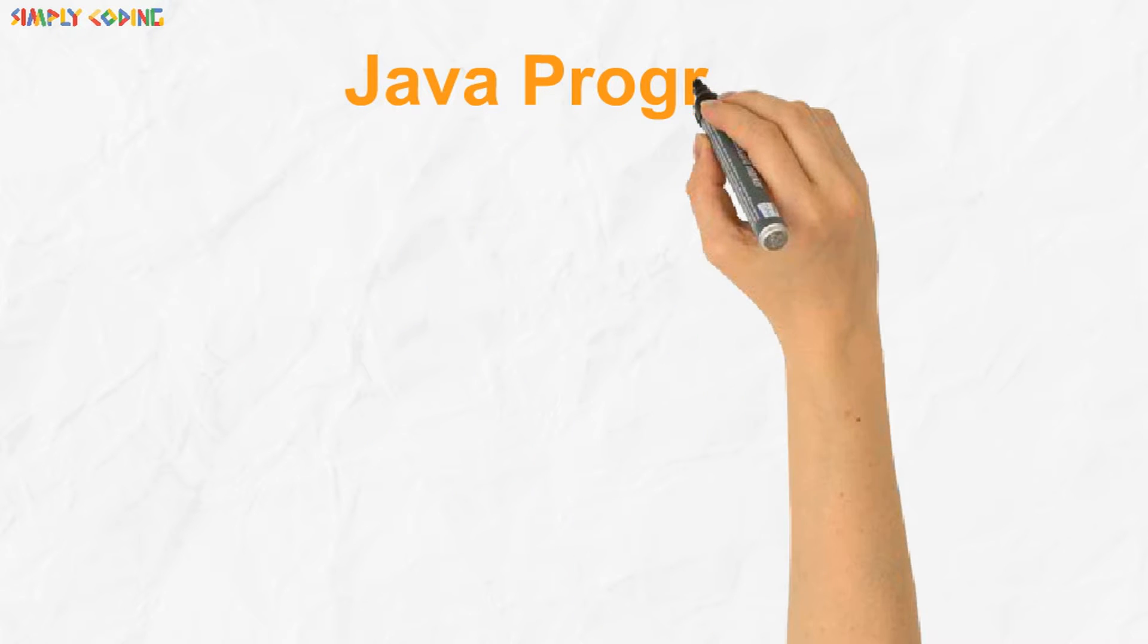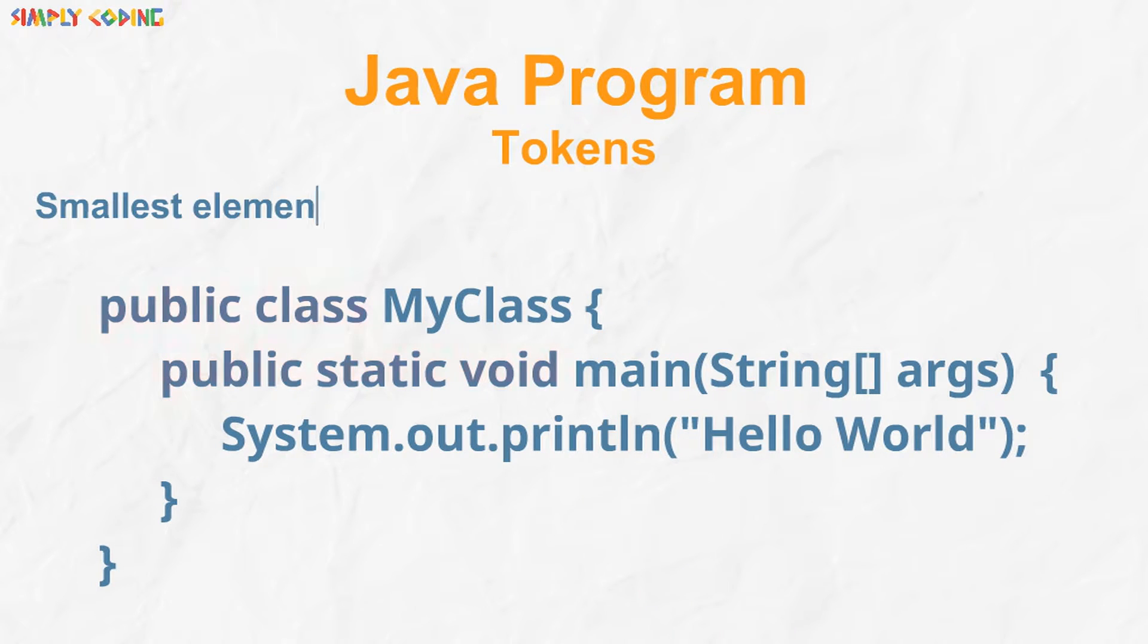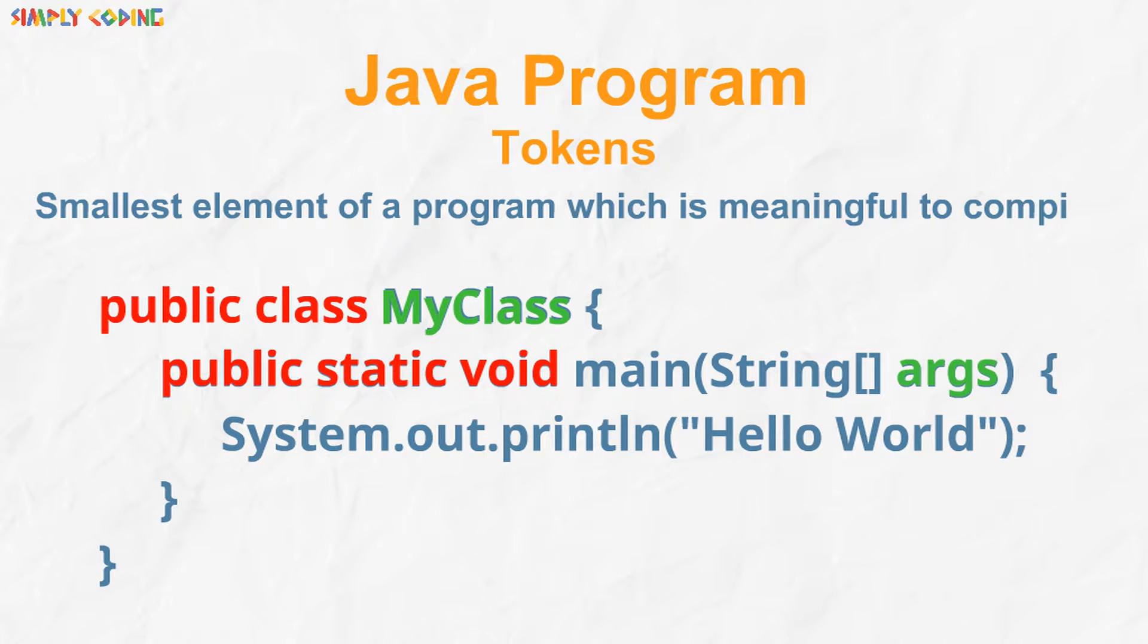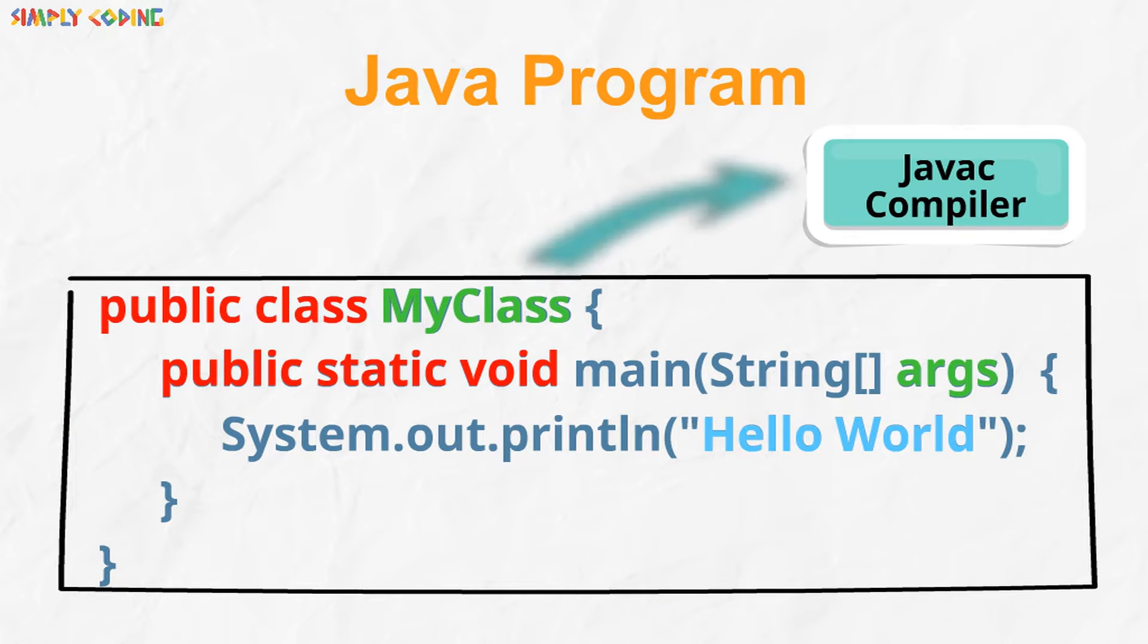Similarly when we are learning how to write Java program, we learn about tokens. A token is the smallest element of a program that is meaningful to the compiler. When we submit a Java program to the compiler, the compiler passes the text and extracts individual tokens.